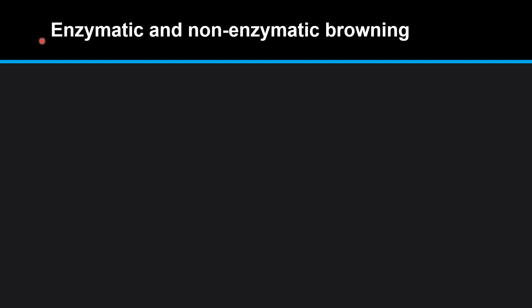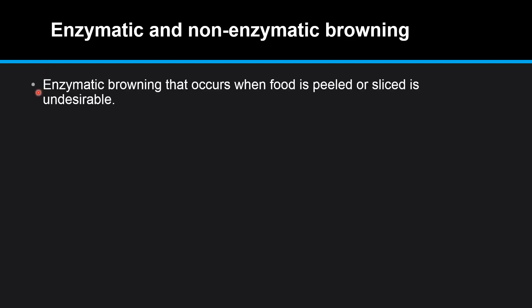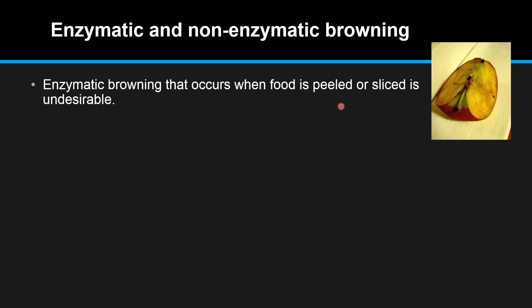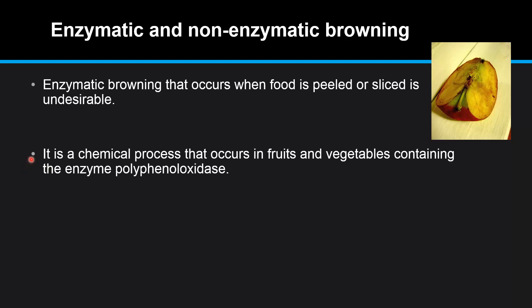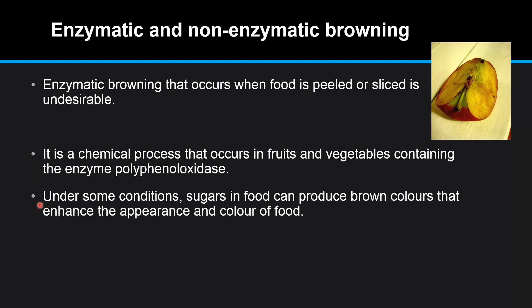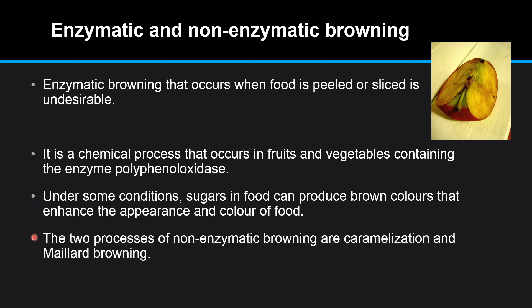Enzymatic and non-enzymatic browning. Enzymatic browning that occurs when food is peeled or sliced is undesirable. Here's an example of an apple that's undergone enzymatic browning. It is a chemical process that occurs in fruits and vegetables containing the enzyme polyphenol oxidase. Under some conditions, sugars in food can produce brown colors that enhance the appearance and color of food. The two processes of non-enzymatic browning are caramelization and maillard browning.